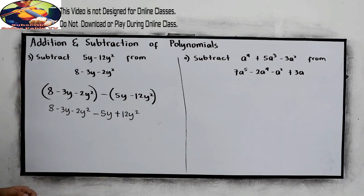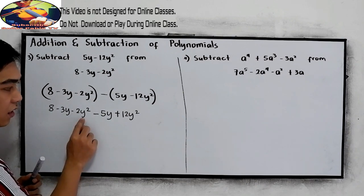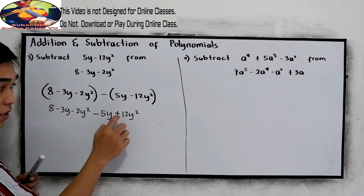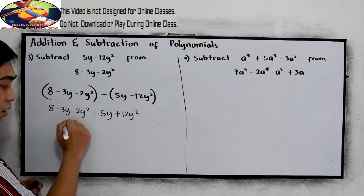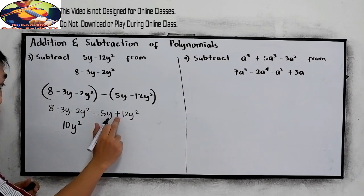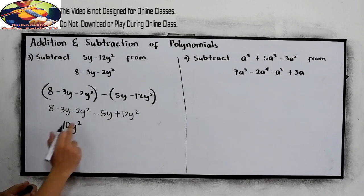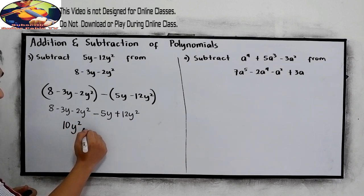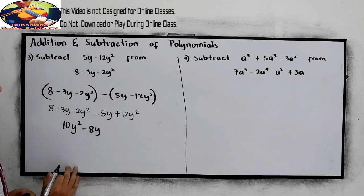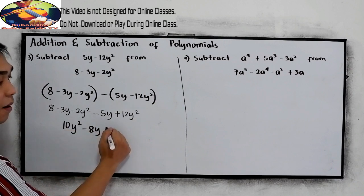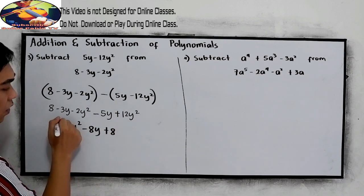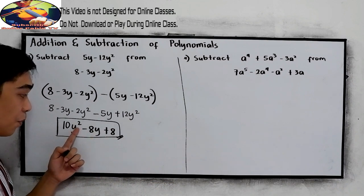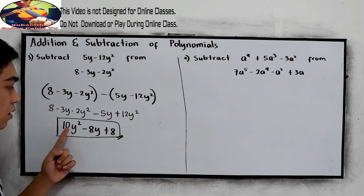Now let us combine like terms. We have variable y with exponent 2: negative 2y squared plus 12y squared is 10y squared — positive because 12 is greater, so copy the sign of the bigger number. Then negative 3y minus 5y gives negative 8y. And we have a constant term, which is positive 8. For our final answer, always arrange in descending order — the highest exponent must be written in the leftmost part of our expression.